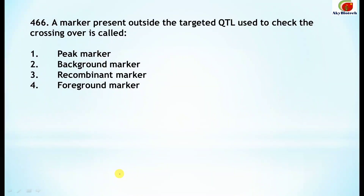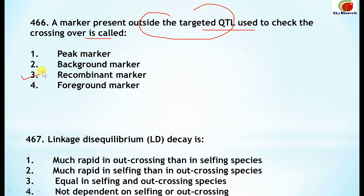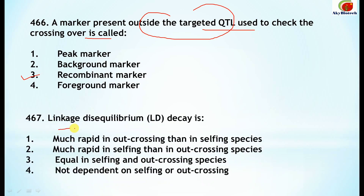A marker present outside the targeted QTL, used to check crossing over, is known as the recombinant marker. Next, linkage disequilibrium (LD) decay is much more rapid in outcrossing species than in selfing species.